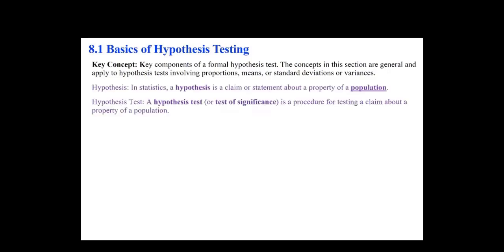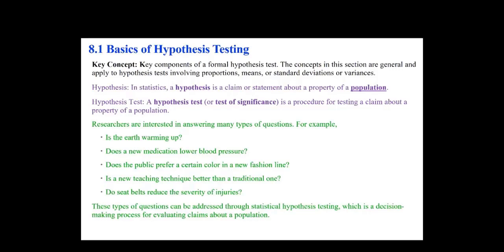In statistics, a hypothesis is a claim or statement about a property of a population. A hypothesis test, or a test of significance, is a procedure for testing a claim about a property of a population. Researchers are interested in answering many types of questions — is the earth warming up? Does a new medication lower blood pressure? Does the public prefer a certain color in the new fashion line? Is a new teaching technique better than a traditional one? Do seatbelts reduce the severity of injuries? These types of questions can be addressed through statistical hypothesis testing, which is a decision-making process for evaluating claims about a population.